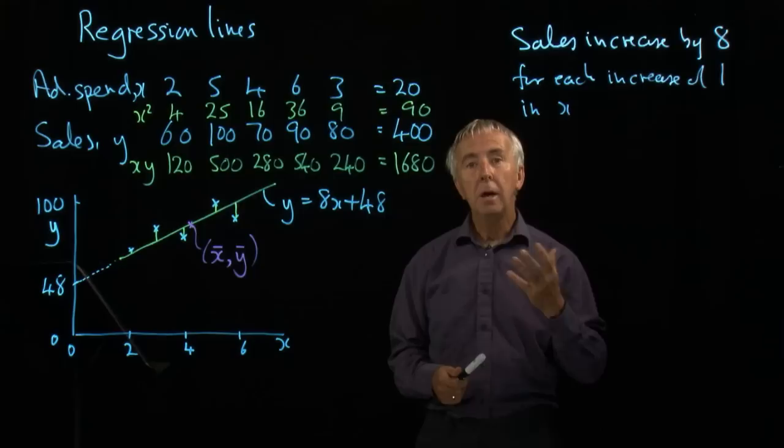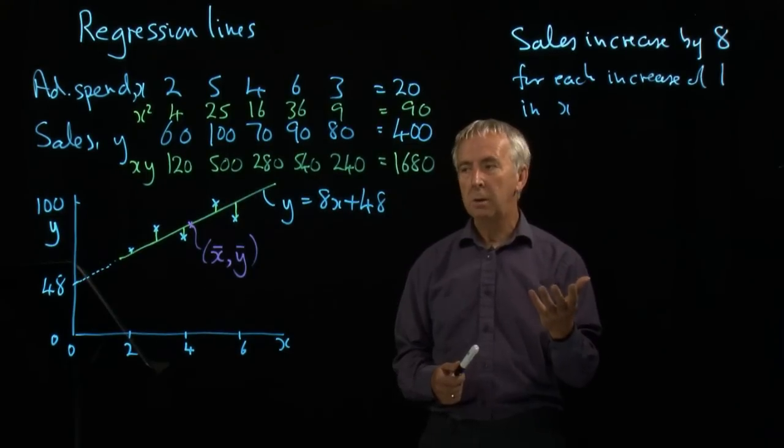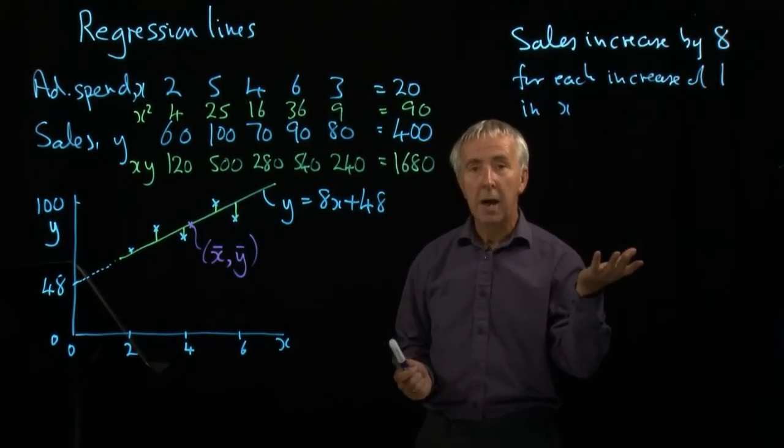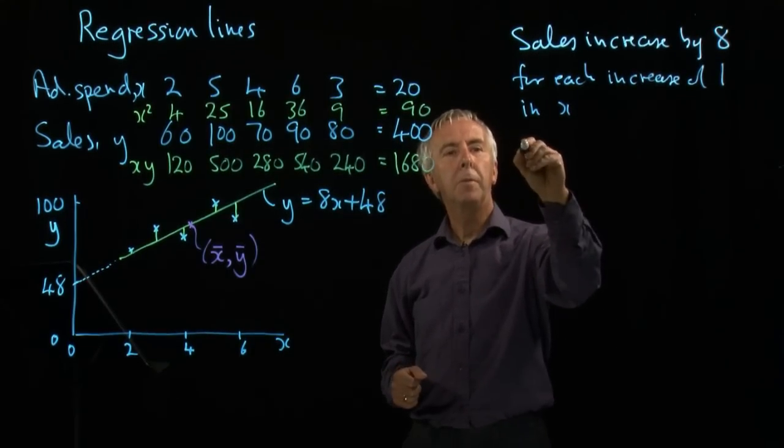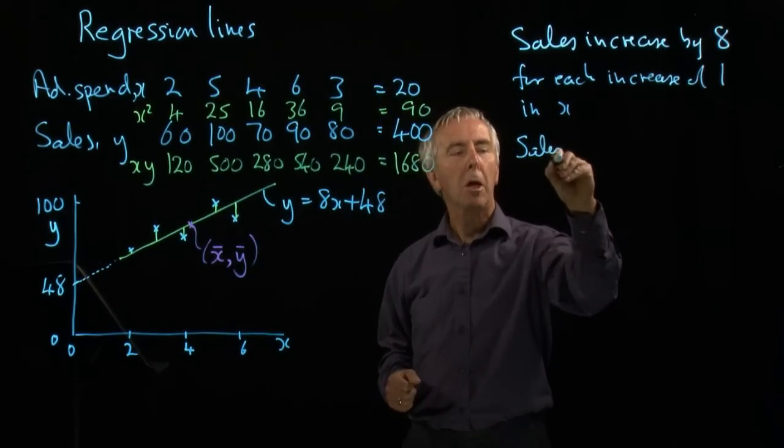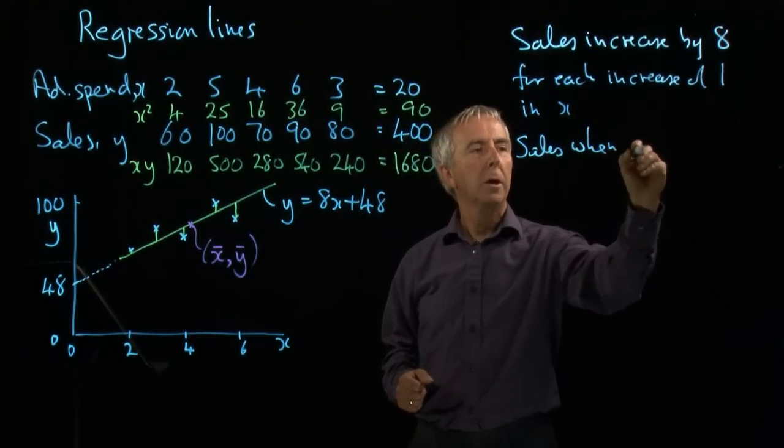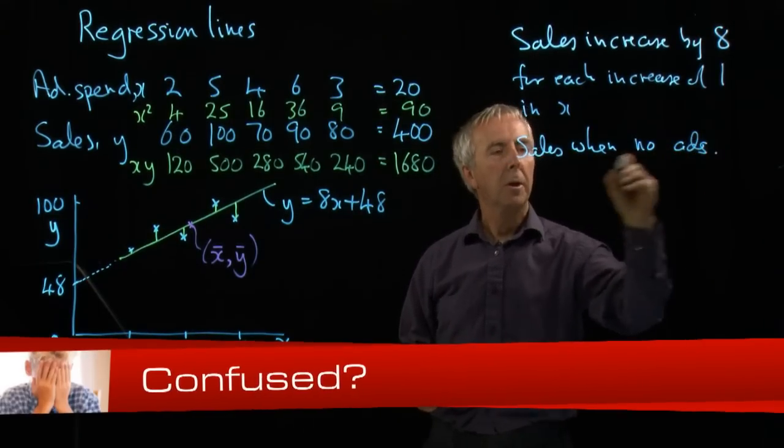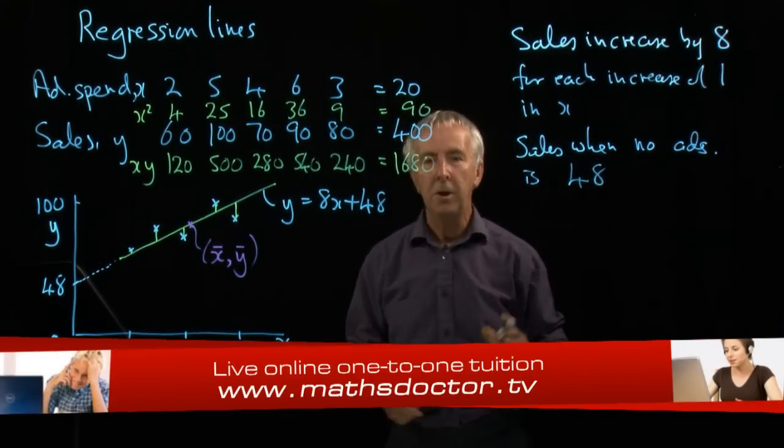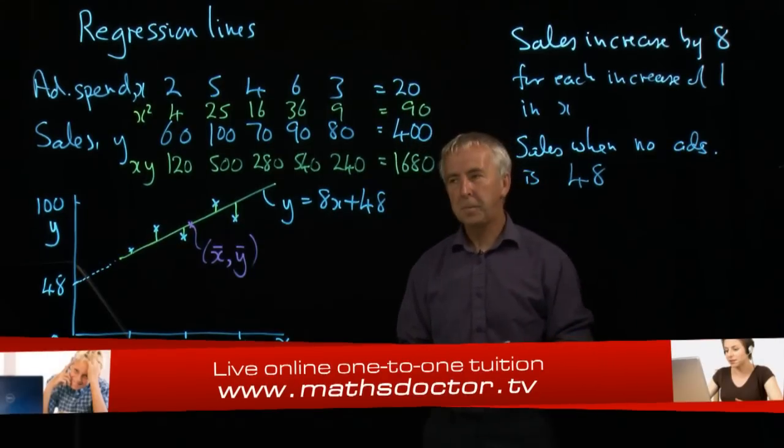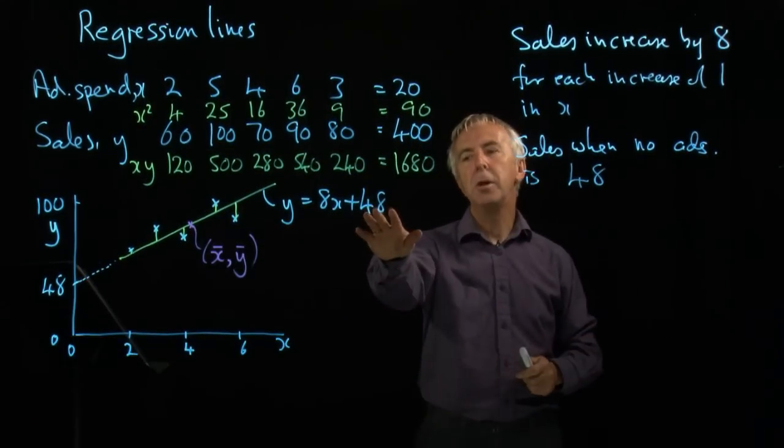So this is saying, even if you do no advertising, you will still get £48,000 worth of sales. So the sales when no ads is 48. Remember, all of these are in thousands of pounds. So those two numbers are useful. They're telling us something about the behaviour of this system.